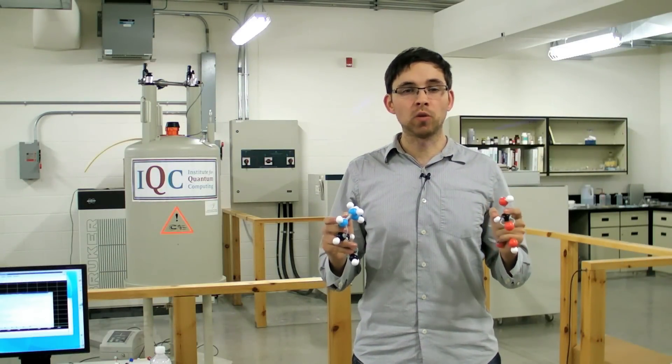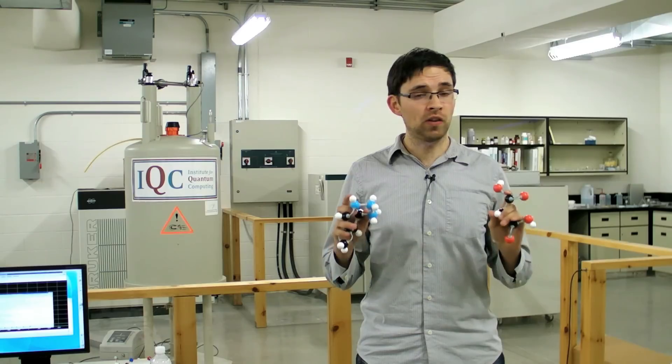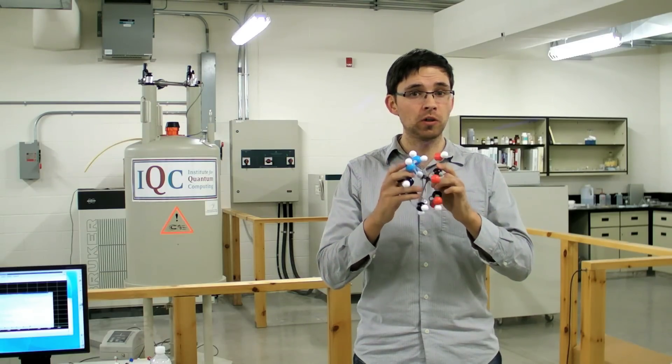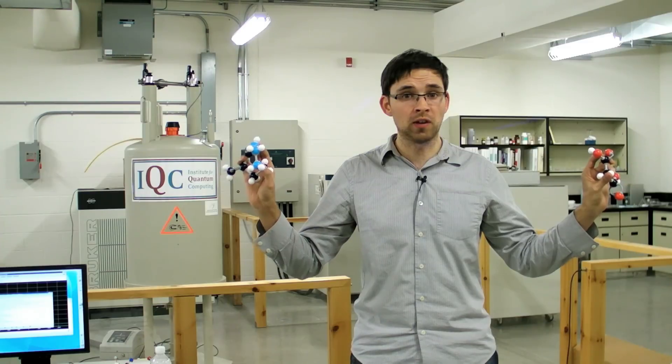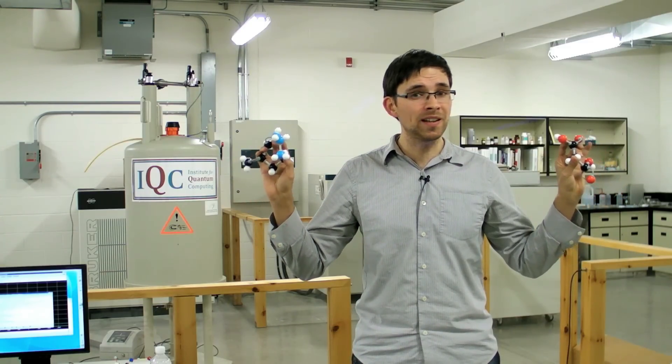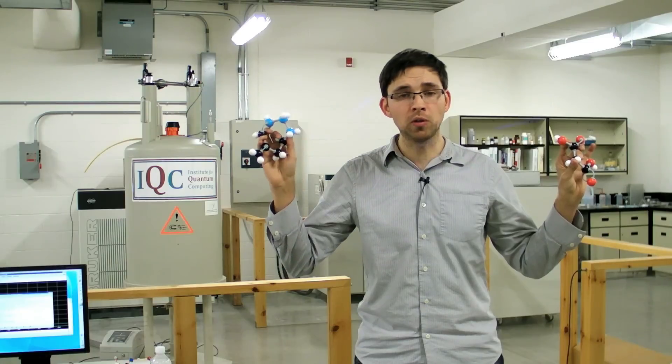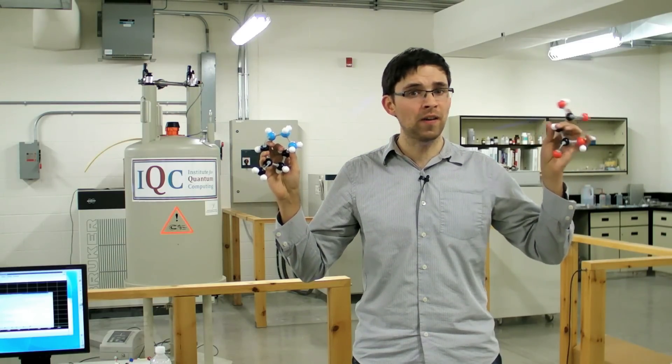When two objects are entangled with one another, they share a peculiar connection. For example, if I were to take these two molecules and entangle them with one another, I could then take them to opposite ends of the universe, and yet, they'd still be connected. Anything I did to this molecule would instantaneously affect this one.